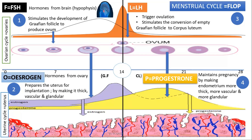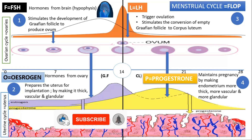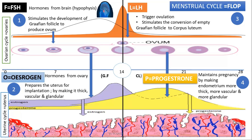What causes blood to come out? Take the example of a sponge — if you put water in a sponge and then suddenly squeeze the sponge, it releases the water it had absorbed. So when the endometrium is developing, it absorbs blood — that's why it becomes more vesicular with more blood coming in. But if the uterus starts to shrink, it squeezes this blood out and then menstruation occurs.